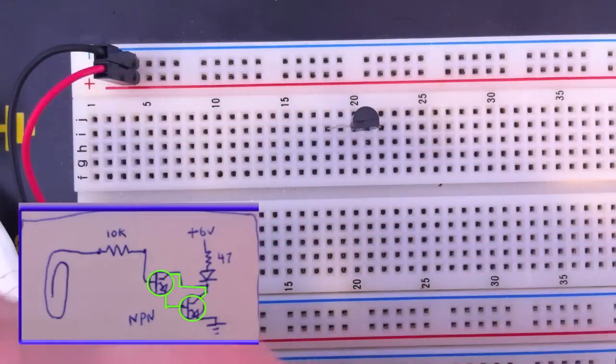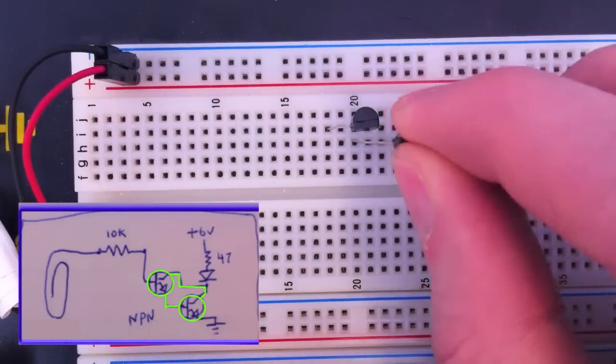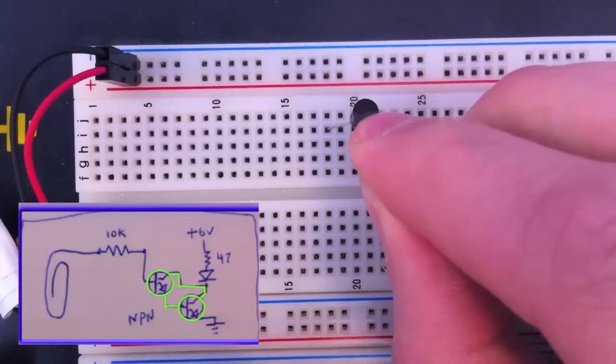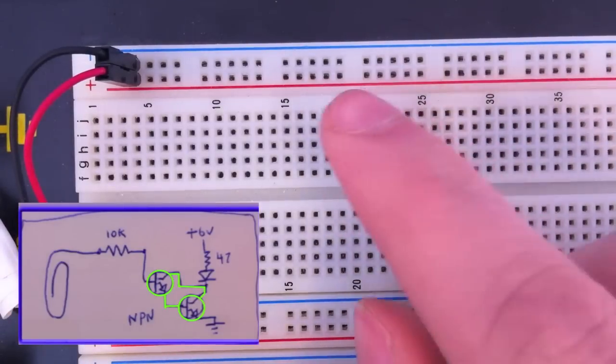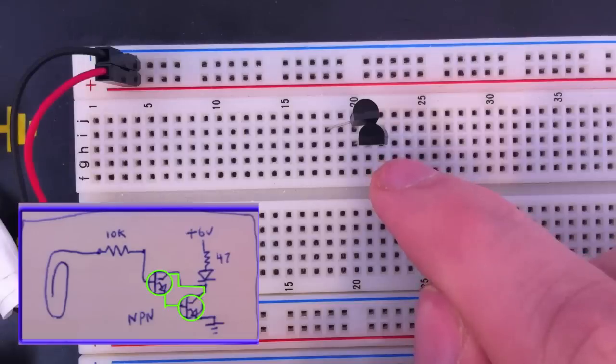The collectors are together. We have our two collectors together in the same line.